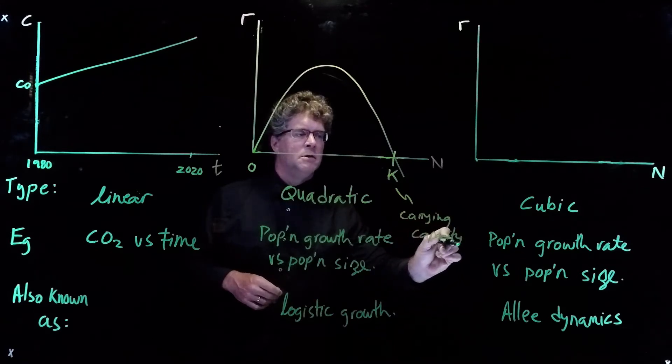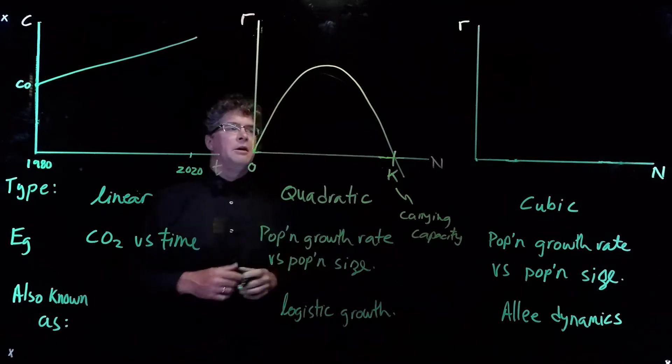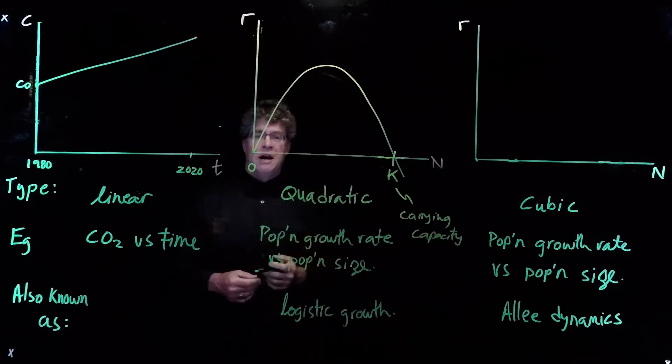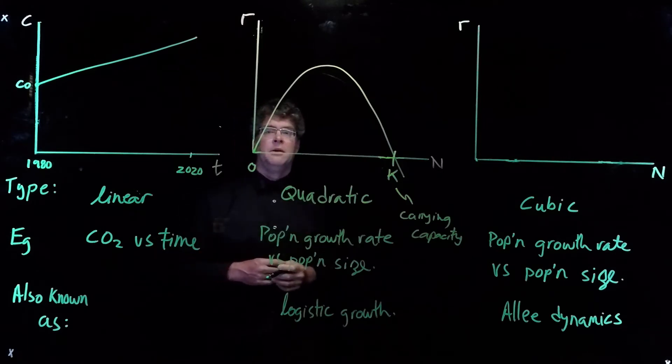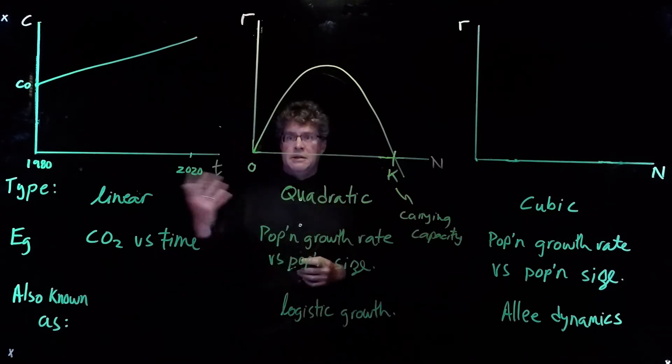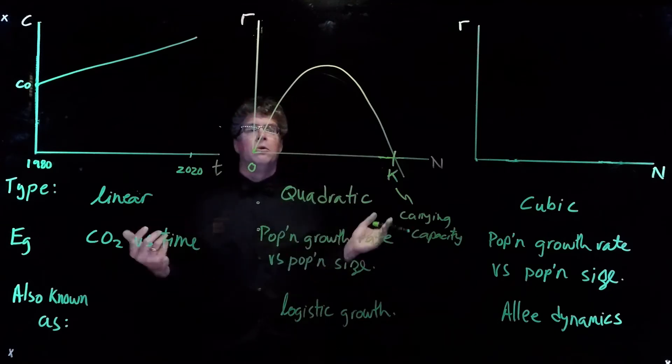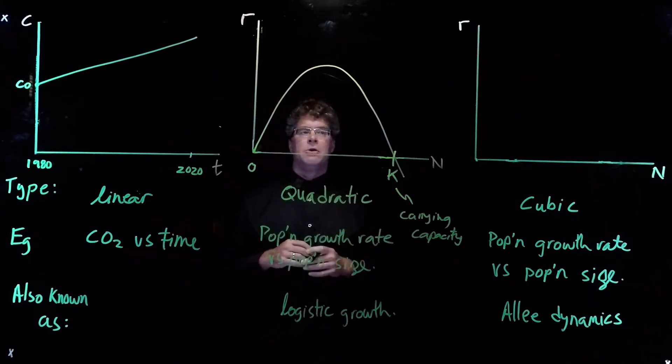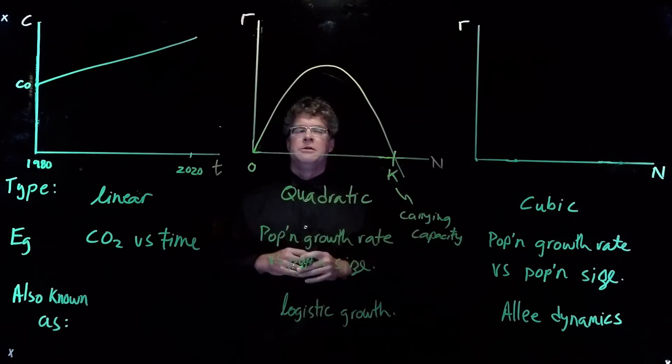And it grows when it's below the carrying capacity. This is also referred to as the logistic growth function. You'll notice that the domain for a quadratic function would be the whole real line, but often when we talk about biological problems, we only draw the part of the function that we're interested in.